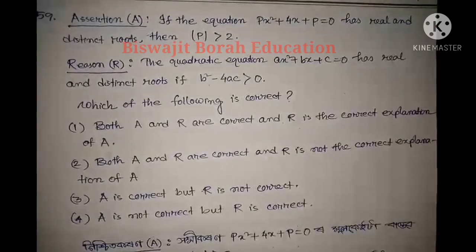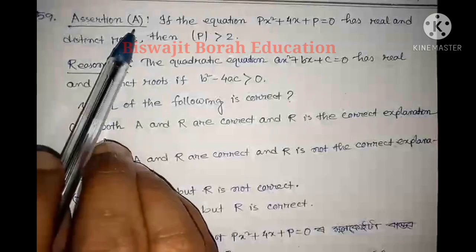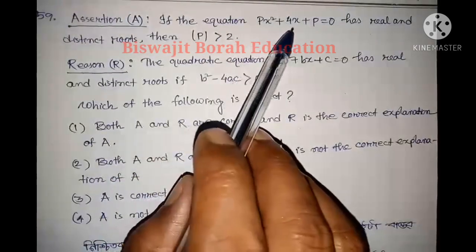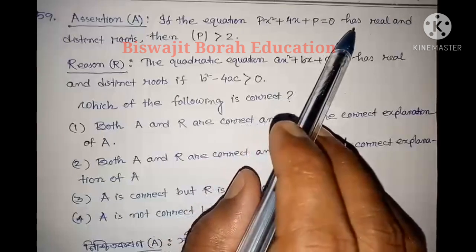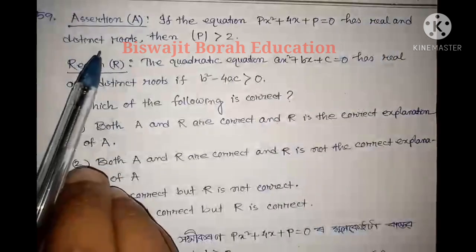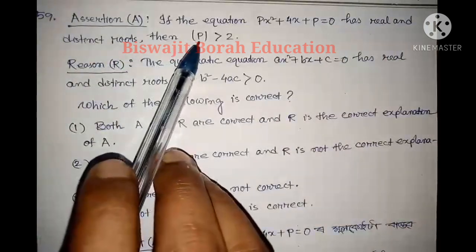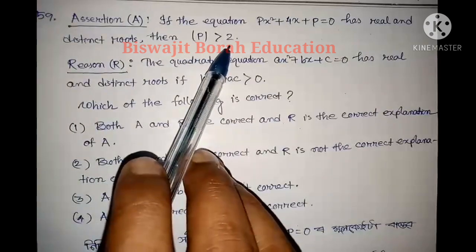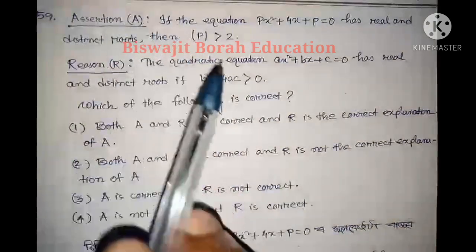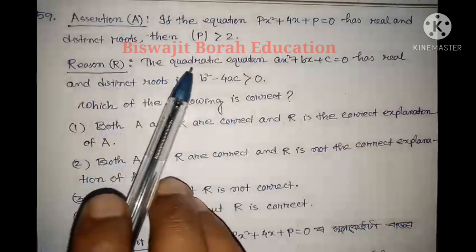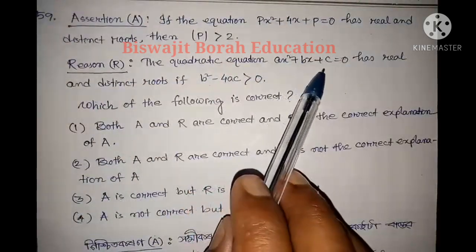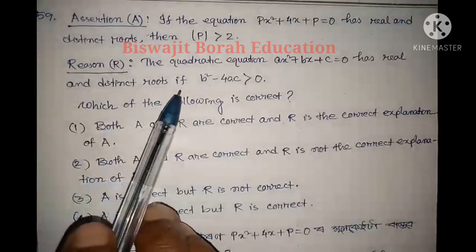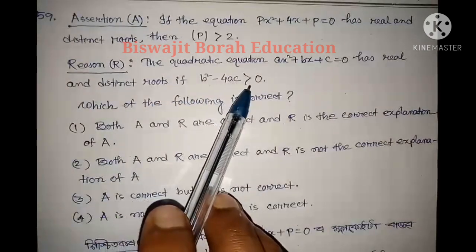The 59 number question is: if the equation px squared plus 4x plus p equals 0 has real and distinct roots, then the value of p is greater than 2. The reason is: if the equation ax squared plus bx plus c equals 0 has real and distinct roots, then b squared minus 4ac is greater than 0.